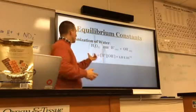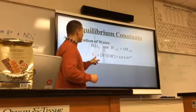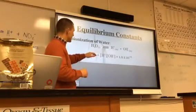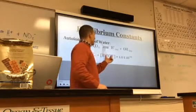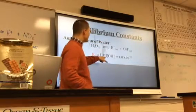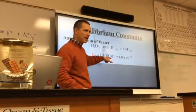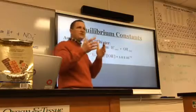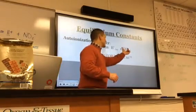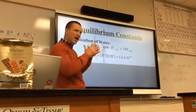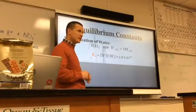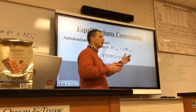We have an equilibrium constant — we call it KW. This K gets its own name because it's so important; that W represents the dissociation of water. We calculate it by taking the concentration of hydrogen ion times the concentration of hydroxide ion. You'll notice I didn't put liquid water in the denominator — in K expressions, we only include aqueous things and gases. Since water is a liquid, it stays out, replaced by one. There is no unit for any equilibrium K.